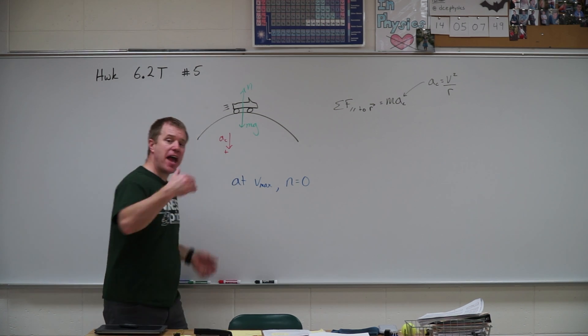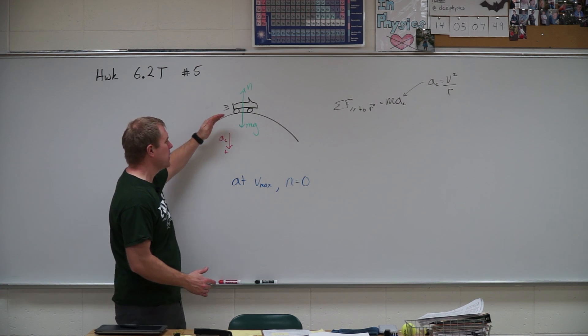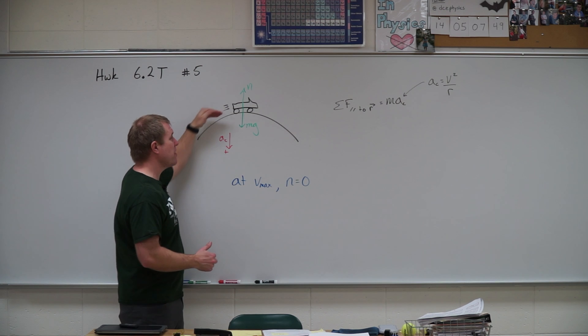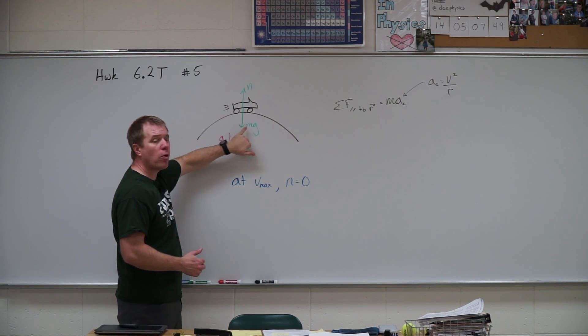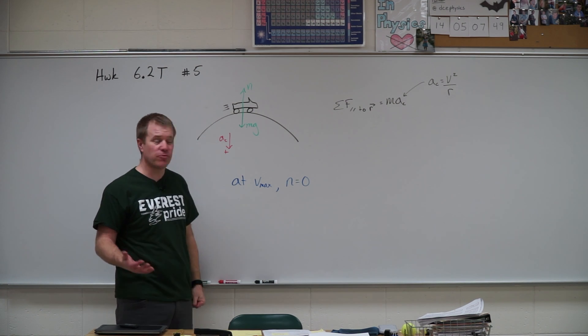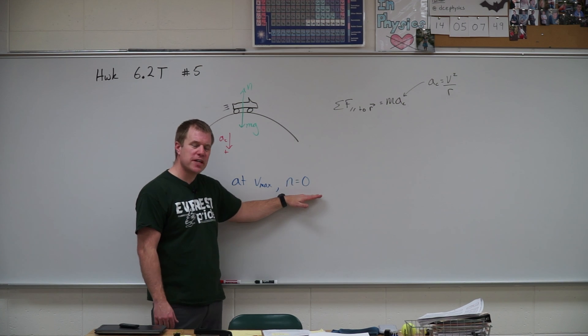And so when we do that, the faster we go, the more gravity has to apply a force to make us change directions. And so the bigger that force is to change directions, the more gravity is doing that and the less supporting force I need from the surface. And so when you reach a maximum speed, the normal force equals zero.